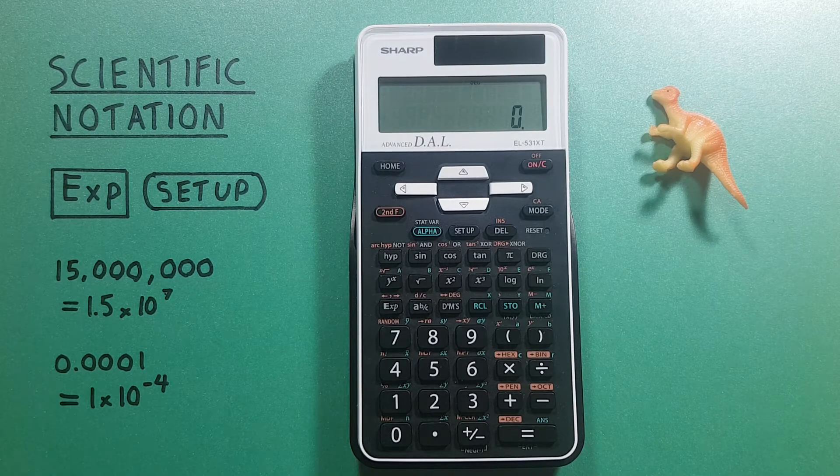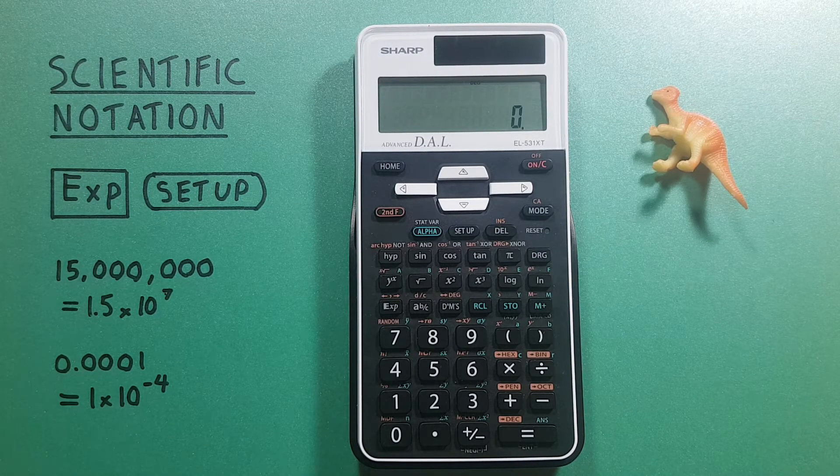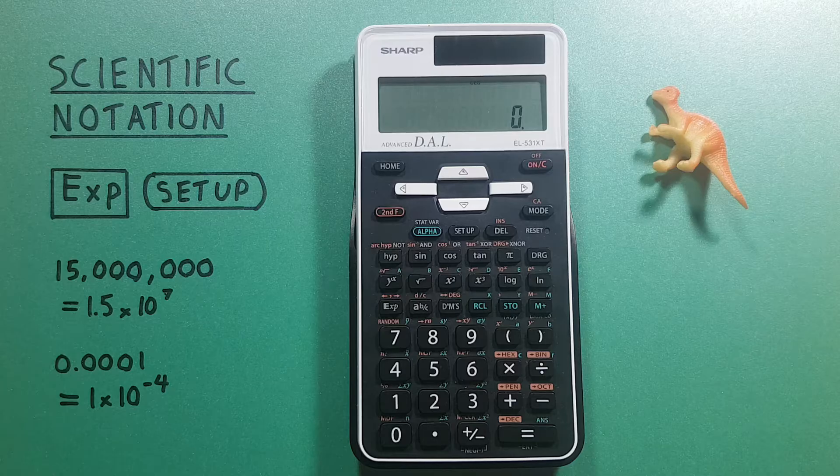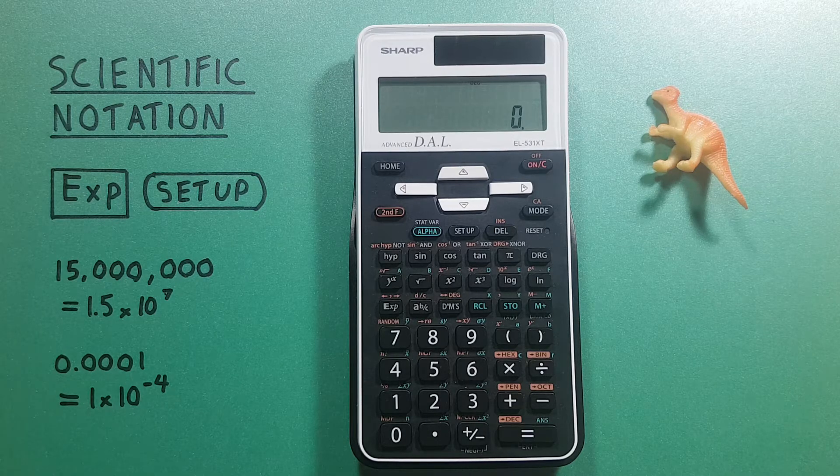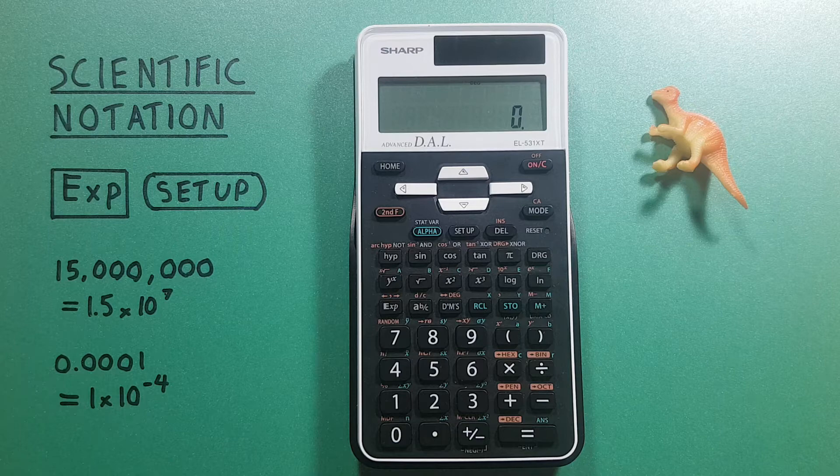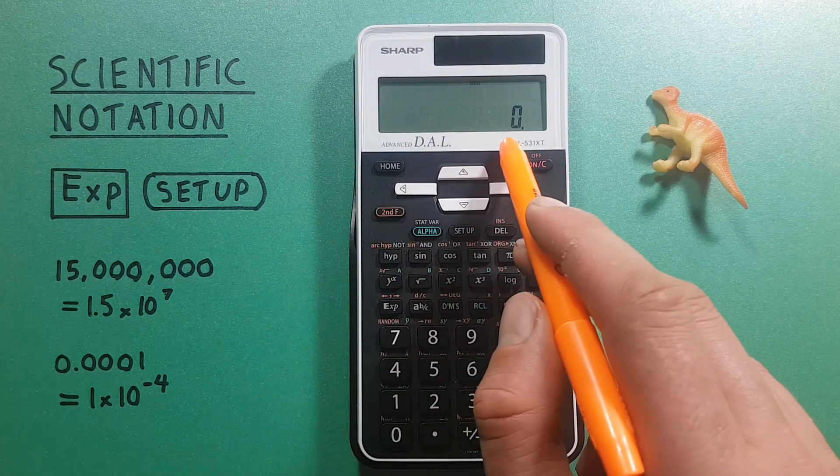What this mode will do is change either very small or very large numbers to scientific notation but leave midsize numbers as all the digits on the screen.